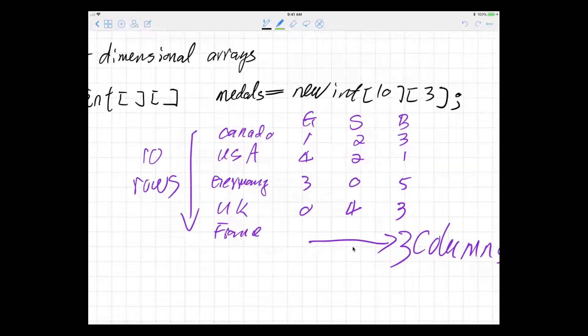The columns represent the medals: the first one is gold, the second one is silver, and the third one is bronze. The countries include Canada, USA, Germany, UK, France, etc.